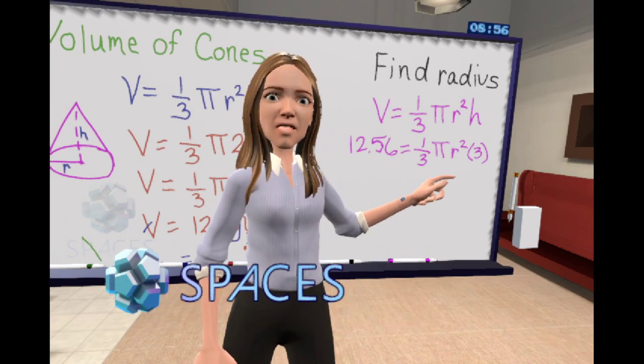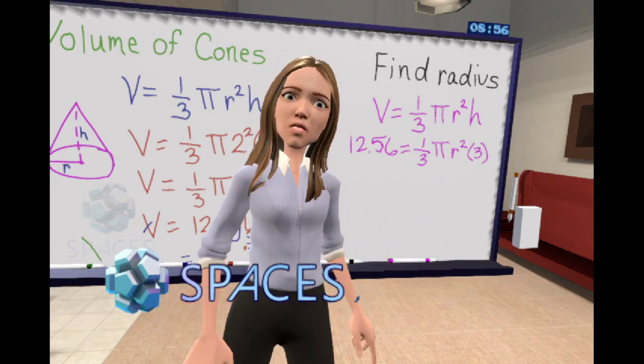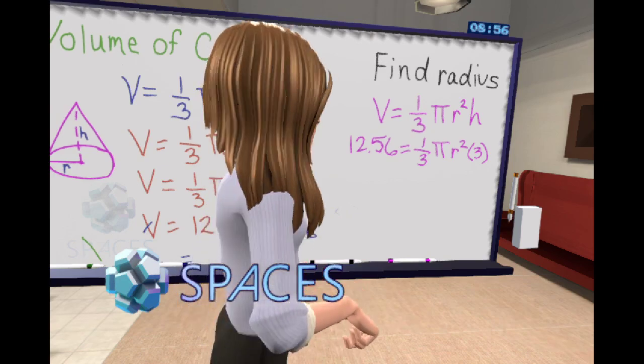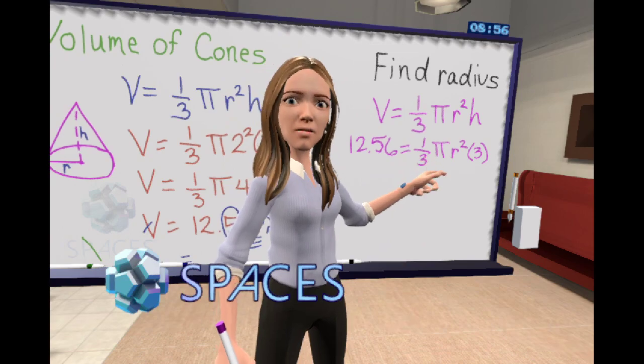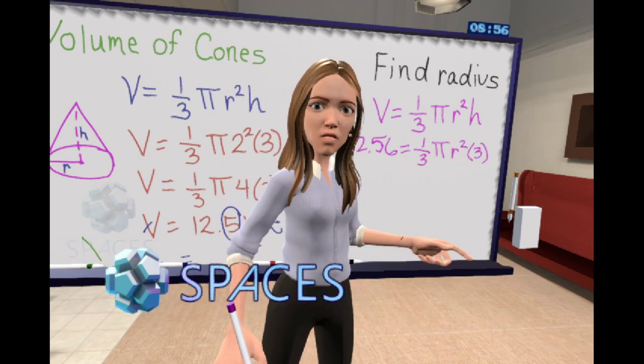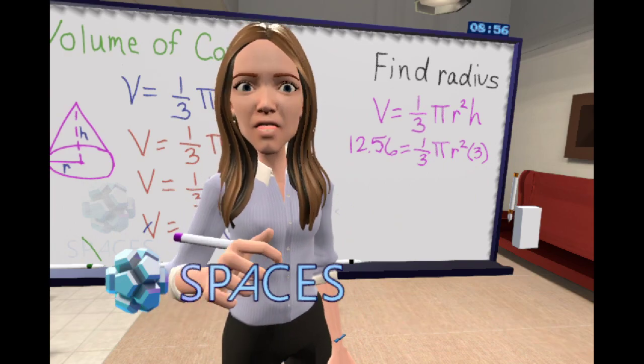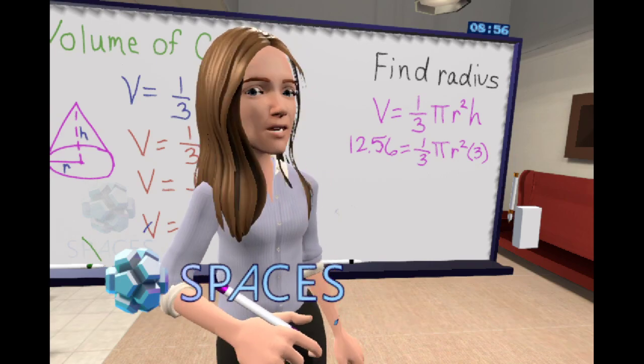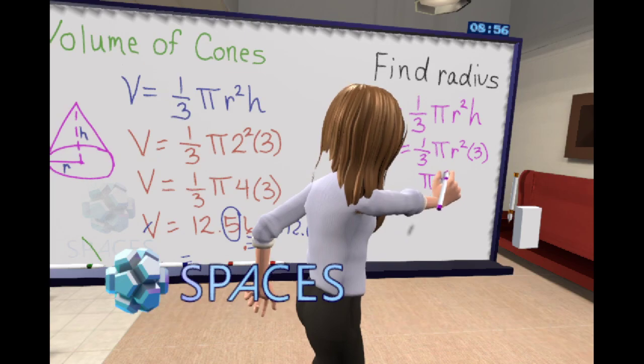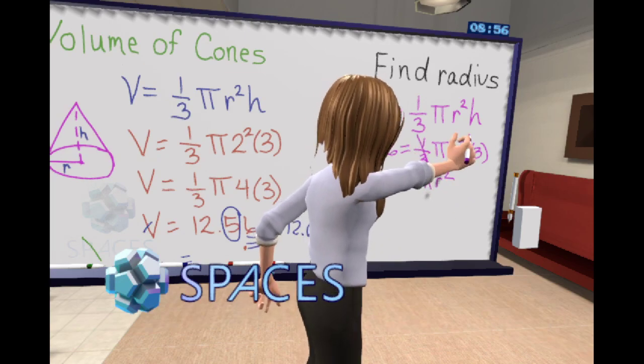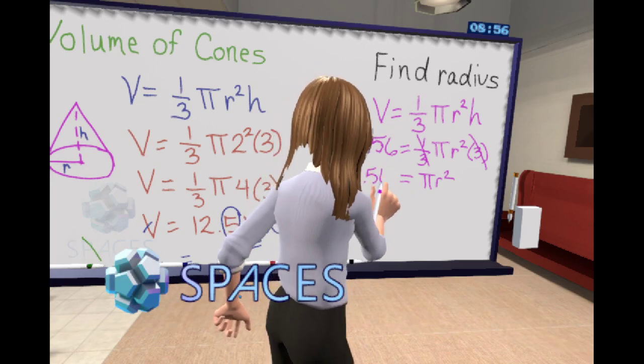If we knew that our height was three and we knew our total volume was 12.56, how would we solve for r? We know we want to get it by itself, and we know all of these are being multiplied by each other. What's the opposite of multiplication? Good, absolutely, division. So let's make it easy on ourselves. One third times three, what do you get? Yeah, it cancels out to one. So that disappears. One times anything is itself, so all we're left with is pi times r squared equals 12.56.